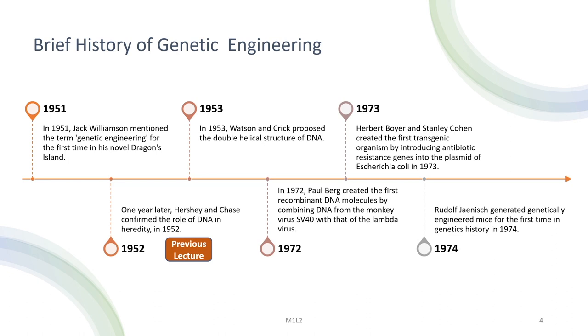This is a brief history of the subject of genetic engineering. In 1951, Jack Williamson mentioned the term genetic engineering for the first time in his novel Dragon Island. In the following year, Hersey and Chase confirmed the role of DNA in heredity in 1952. In 1953, Watson and Crick proposed the double helical structure of DNA, which is also known to you from the last lecture.